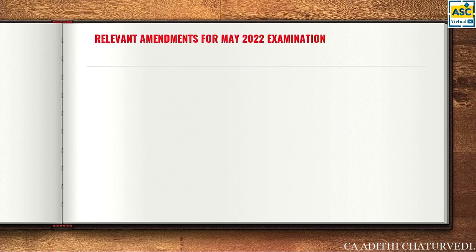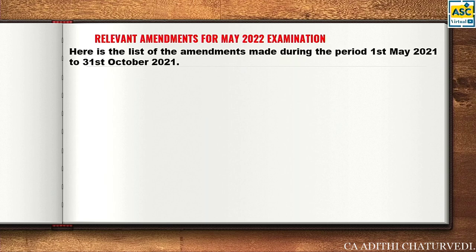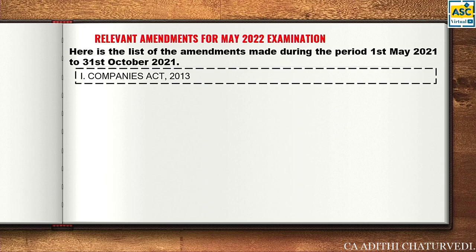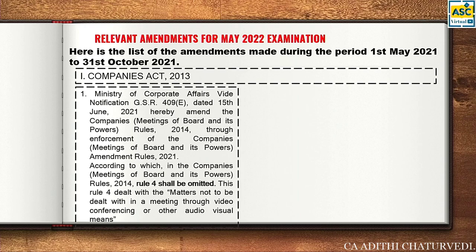Now we move to the eight-page booklet given by ICAI. Here is a list of amendments in that booklet for Companies Act. Ultimately the whole thing means Rule 4 will be omitted.